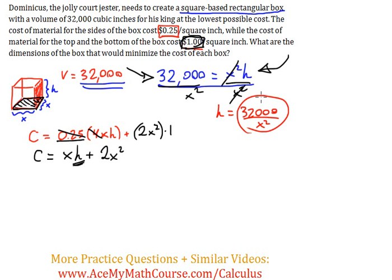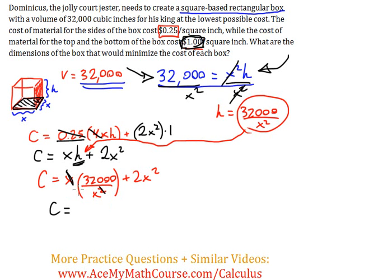Now I'll substitute h into the cost function: C = x(32,000/x²) + 2x². The x² cancels with one x, giving us C = 32,000/x + 2x².